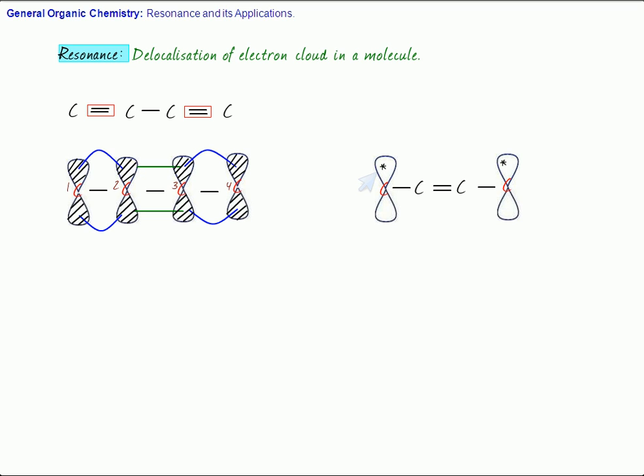That means, if we look at this structure, as the bonds were in conjugation, hence we can say the position of the double bond is not fixed. Sometimes it is between 1 and 2, sometimes between 2 and 3, sometimes between 3 and 4. That means we can say the position of the double bond in this molecule is not stationary, it is moving or getting delocalized. And as electron cloud is a negative charge, we can say the more delocalization, the more will be the stability.